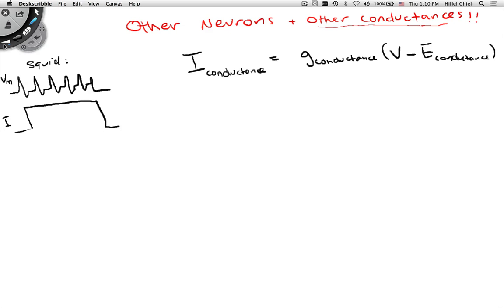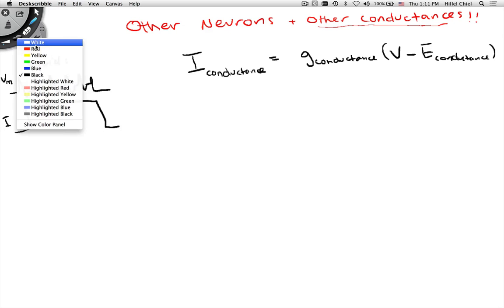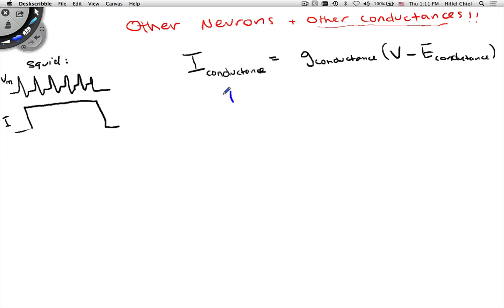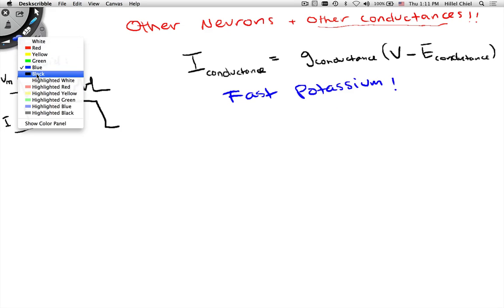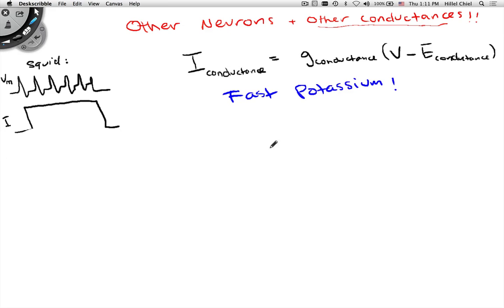But we'll just focus on one particular current that was described by Connor and Stevens called the fast potassium current. And now, before we get into that specifically, what's the general form that g conductance is going to take?